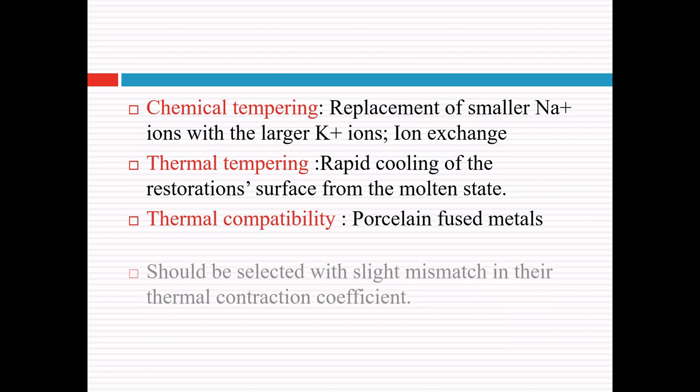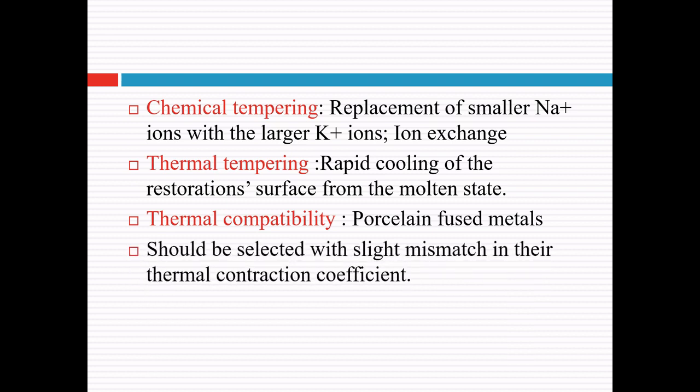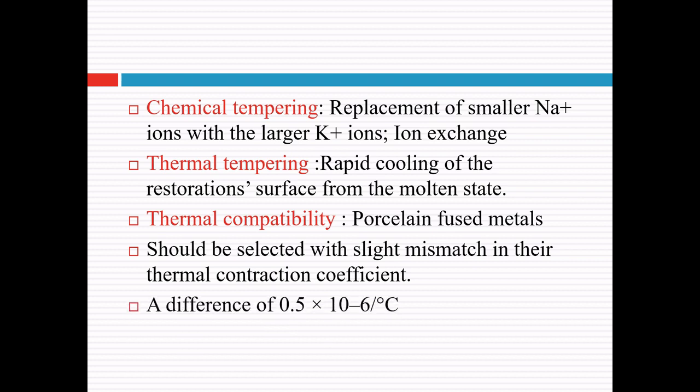Thermal compatibility applies to porcelain fused to metals. Here the metal and porcelain should be selected with a slight mismatch in their thermal contraction coefficient. The metal's thermal contraction coefficient should be slightly larger so that the metal contracts slightly more than the porcelain on cooling from the firing temperature. This mismatch leaves the porcelain in residual compression and provides additional strength for the prosthesis. Usually the difference is 0.5 × 10⁻⁶ per degree Celsius, causing the metal to contract slightly more than the ceramic, resulting in development of residual compression in the ceramic surface.